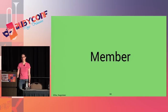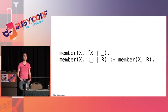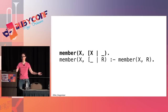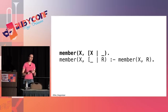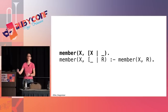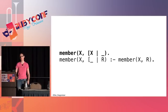Here's a quick list rule — 'member,' like include? in Ruby. X is a member of a list if X is the first thing in that list. Or: X is a member of a list if X is a member of the rest of the list — I don't care about the first element. The second case uses recursion and the underscore don't-care pattern.